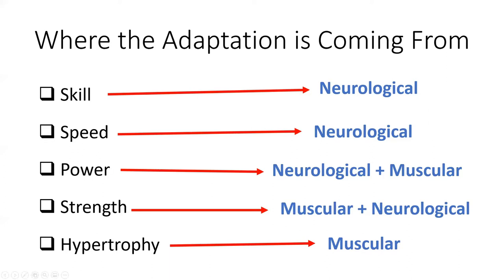Not all sports require all of these adaptations. For example, hypertrophy was something we tried to avoid when training sprinters — if they added more weight, it would slow them down. We focused on neurological factors with minimal hypertrophy for injury prevention. While now working with high school and college baseball players that are undersized, hypertrophy and strength are huge goals, and speed and power are put a little more on the back burner because these are the goals at the time.